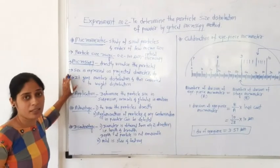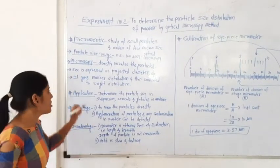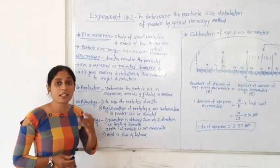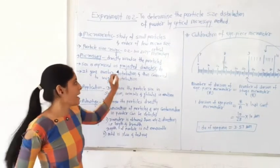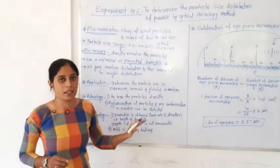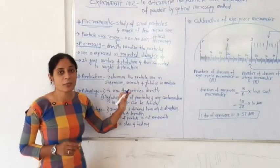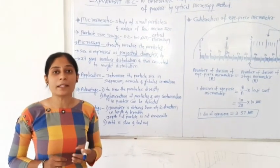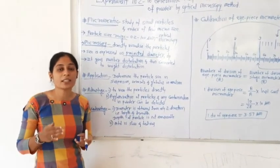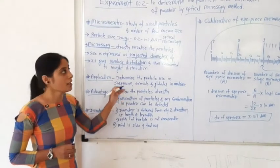In the last experiment, the particle size was expressed as a diameter. In the sieving method the particle size is expressed as a sieve diameter, whereas in optical microscopy the particle size is expressed as a projected diameter — this is the key difference. Also, in optical microscopy, it first gives the number distribution and then converts it into weight distribution. We count the number of particles in each size range (0–30, 30–60, 60–90, etc.) and then convert that number distribution into weight distribution.